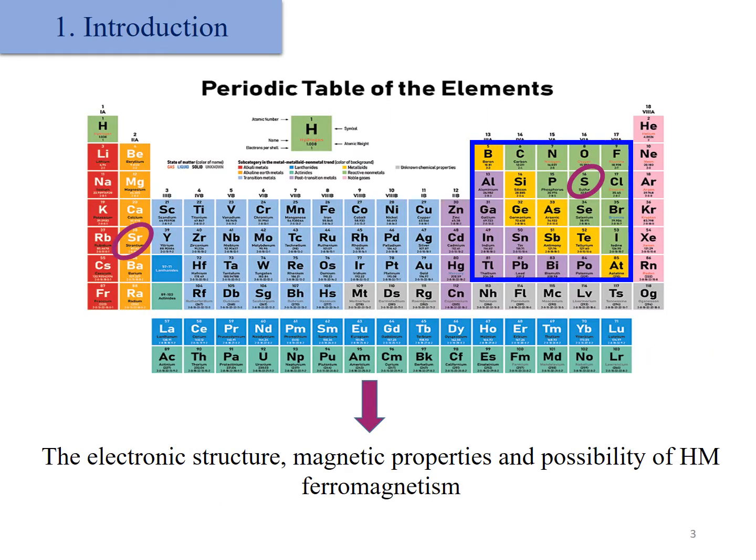Recently, doped alkaline earth chalcogenides with non-magnetic elements in the anionic state show ferromagnetism and an important induced magnetic moment. So in our work, the possibility of ferromagnetism in SrS binary with inclusion of non-magnetic entities such as boron have been performed.